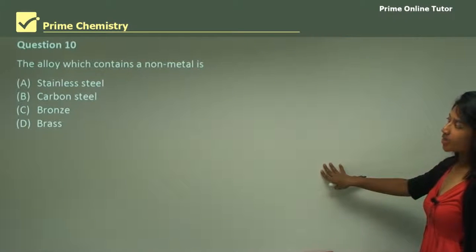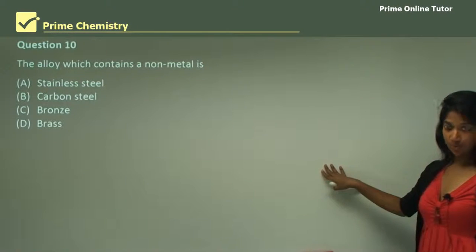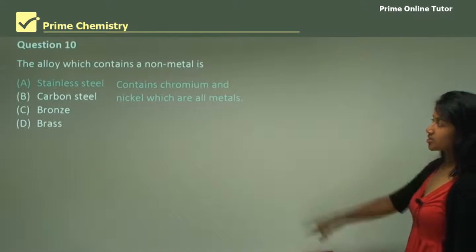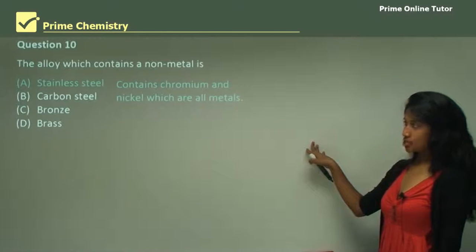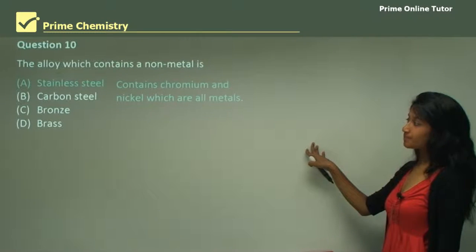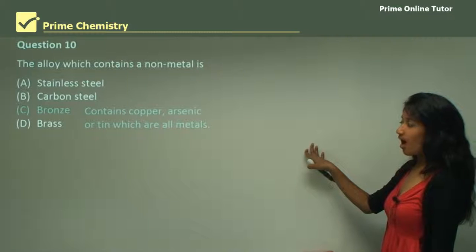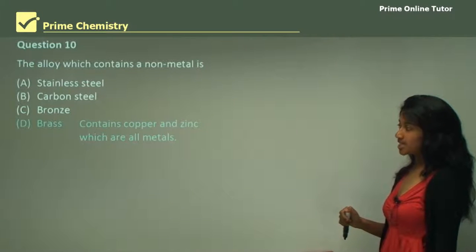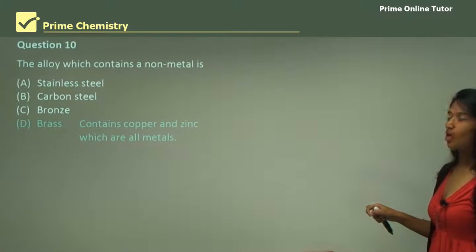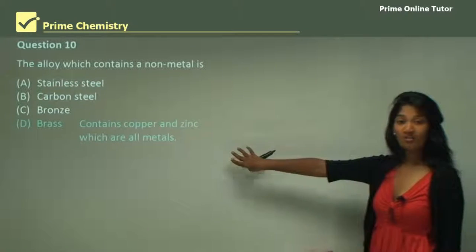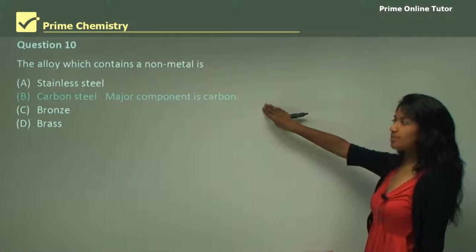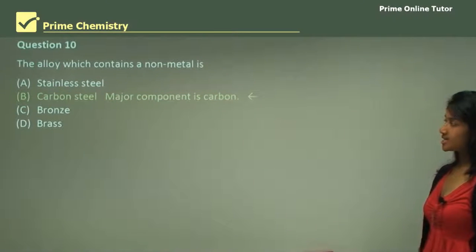Question 10: the alloy which contains a non-metal. Option A is stainless steel — it contains chromium and nickel, which are all metals, so option A is not the answer. Option C, bronze, contains copper, arsenic, or tin, which are all metals. Option D, brass, contains copper and zinc, which are all metals. Option B is carbon steel — it has carbon as a major component, which is a non-metal, therefore B is the answer.